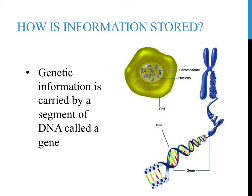In every living organism on Earth, information is passed on by a molecule called DNA, a type of nucleic acid that is typically found in the nucleus of a cell. In humans, there are about 20,000 chunks of DNA that code for specific things called proteins. These chunks of DNA are referred to as genes.